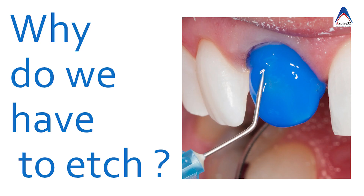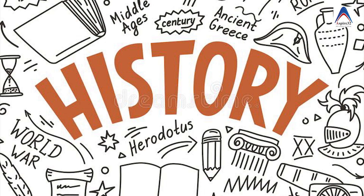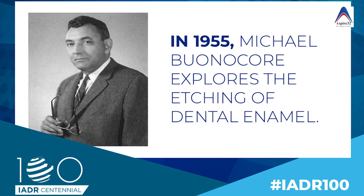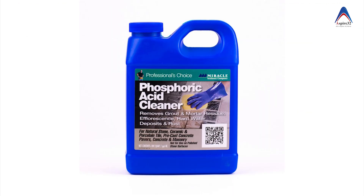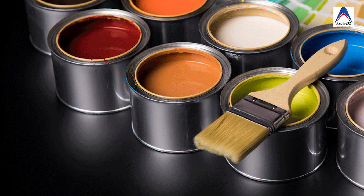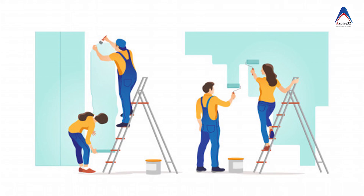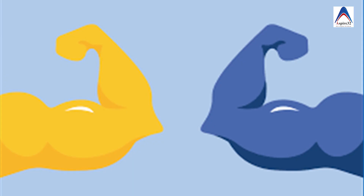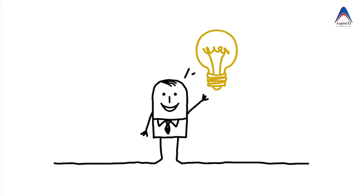The first obvious question would be: why do we have to use the etchant if you want to do a bonding? The answer lies with its invention. It was in 1955 when Bonocore realized that people were using phosphoric acid on walls before painting, and that was seen to improve the adhesion of paint with the walls. He got the idea to use the same technique in bonding restorative materials with the tooth structure.